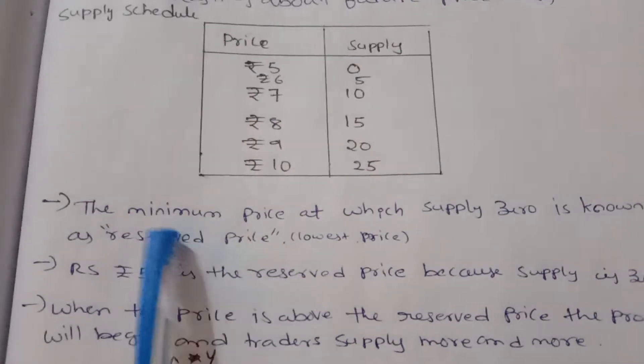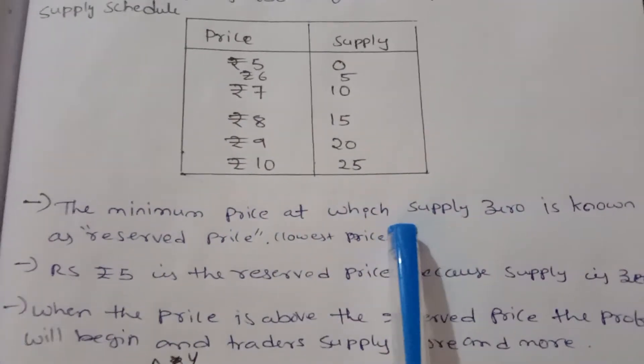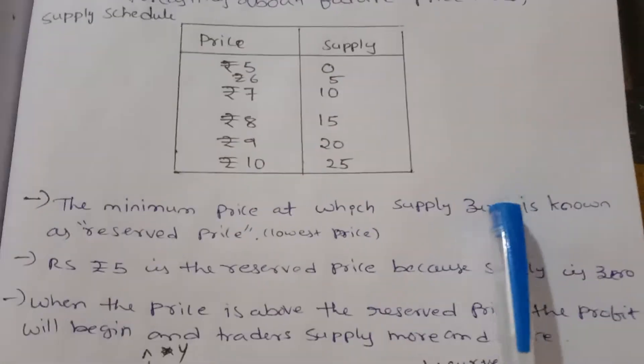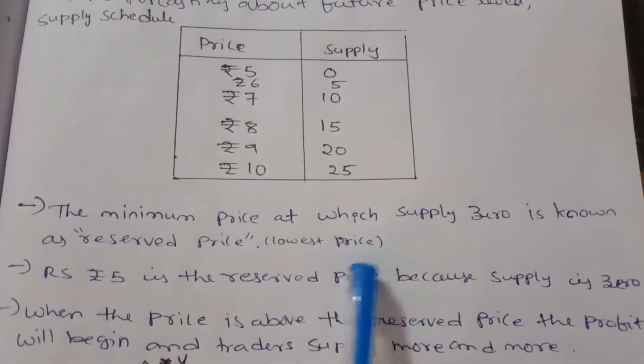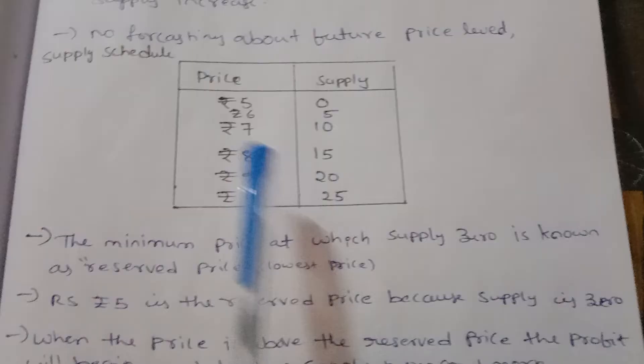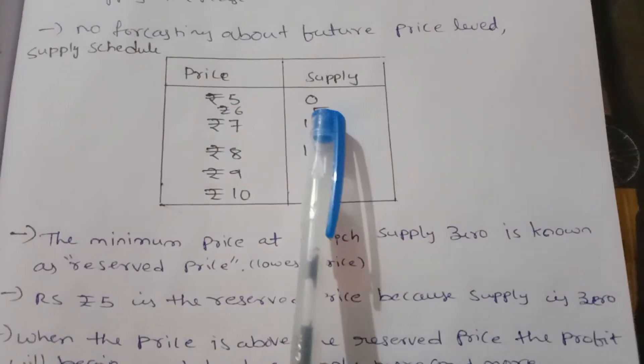The minimum price at which supply is zero is known as the reserved price.